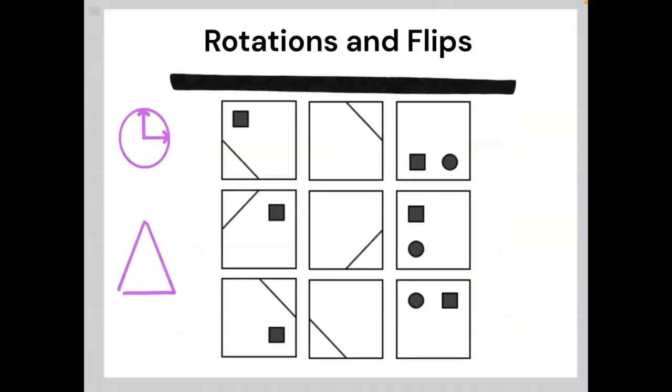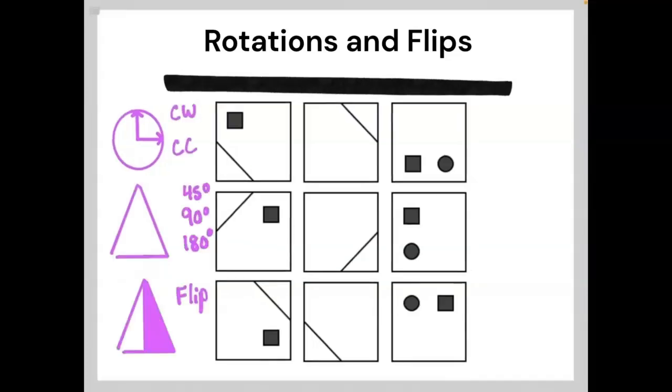Rotations and flips are very common logic patterns. Usually the entire element will rotate in the same direction, but it is possible for only certain parts of the element to rotate or for different parts of the same element to be rotating in two different ways. In these types of matrix problems, the elements can either be rotated clockwise or counterclockwise.